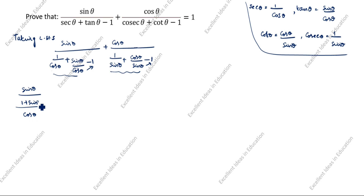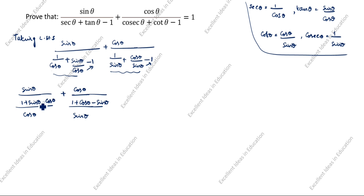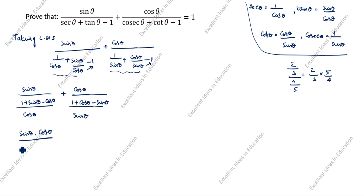Using the rule that (a/b) ÷ (c/d) = (a/b) × (d/c), we rewrite this as: sinθ × cosθ divided by (1 + sinθ − cosθ), plus cosθ × sinθ divided by (1 + cosθ − sinθ).